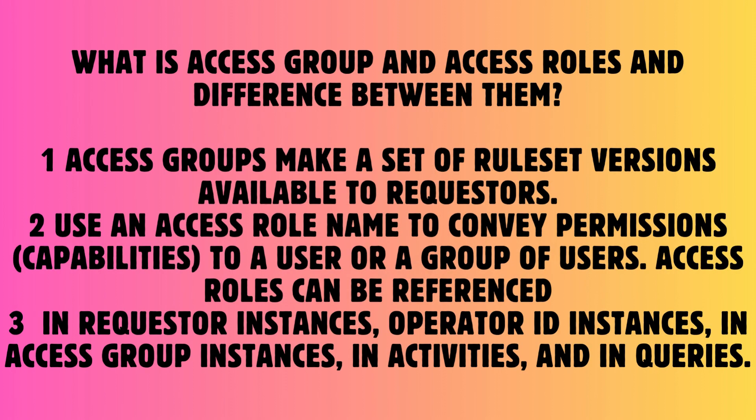Question: What is Access Group and Access Roles, and the difference between them? Answer: 1. Access groups make a set of rule set versions available to requesters. 2. Use an access role name to convey permissions and capabilities to a user or a group of users. 3. Access roles can be referenced in requester instances, operator ID instances, access group instances, in activities, and in queries.